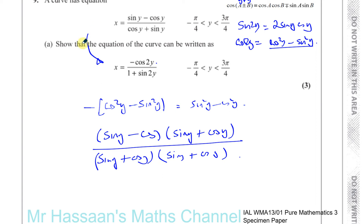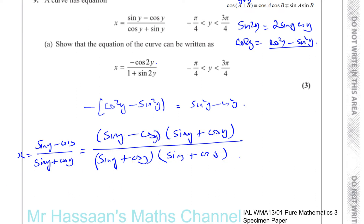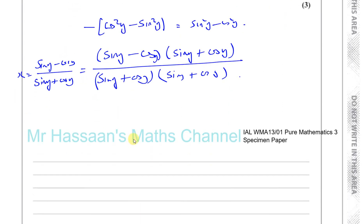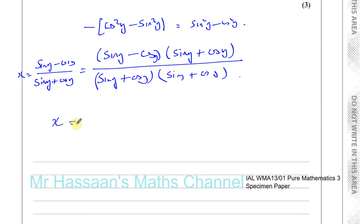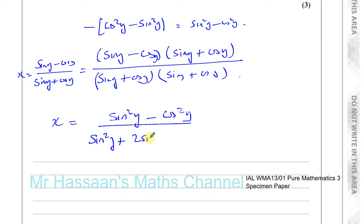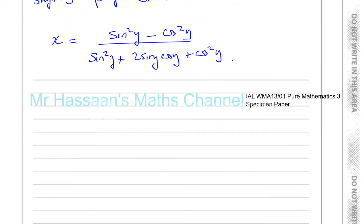So let's see how this turns out. I start off with x equals sine y minus cosine y over sine y plus cosine y — same as the original — and I've multiplied both the top and bottom by sine y plus cosine y. So it's the same fraction; I haven't changed the fraction. Now I've got x equals: the top gives me sine squared y minus cosine squared y, and the bottom, if I expand it, I get sine squared y plus 2 sine y cosine y plus cosine squared y. Now, sine squared y minus cosine squared y is the same as minus cosine squared y minus sine squared y — that's a minus bracket outside.